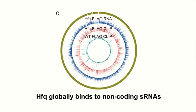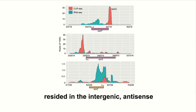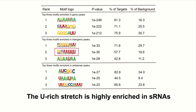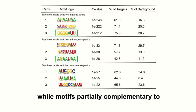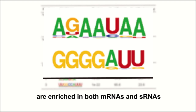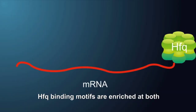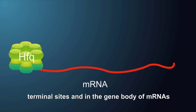HFQ globally binds to non-coding sRNAs residing in the intergenic and antisense regions and in the 3' regions of mRNAs. The U-rich stretch is highly enriched in sRNAs, while motifs partially complementary to A-G-A-A-U-A-A and G-G-G-G-A-U-A are enriched in both mRNAs and sRNAs. HFQ-binding motifs are enriched at both terminal ends and in the gene body of mRNAs.